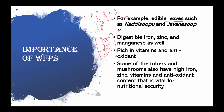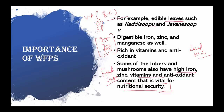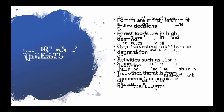Tubers and fruits from the forest that are rich in vitamins and antioxidants are in high demand in local markets. Some tubers and mushrooms also have high iron, zinc, vitamin, and antioxidant content. This is very important for the nutritional security of the country. In India, many people face food insecurity, so if we start looking at wild food plants from the perspective of nutritional and food security, it can help address the food crisis significantly.